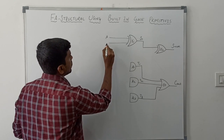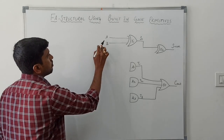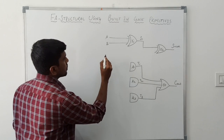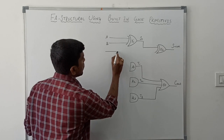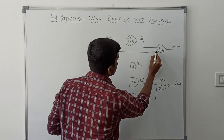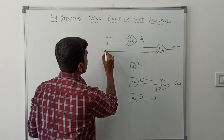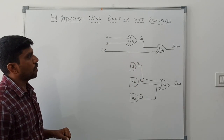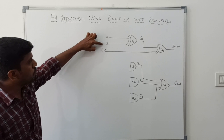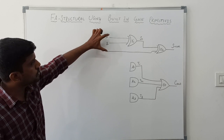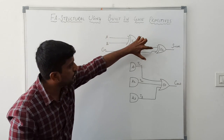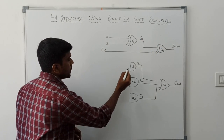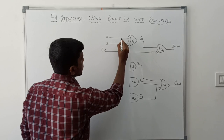Inputs a and b are connected to the first XOR gate. The third input c-in is connected to the second XOR gate. So the three input signals a, b, and c-in are connected to XOR gate 1 and XOR gate 2, and finally we get the result sum.